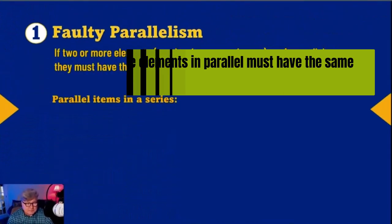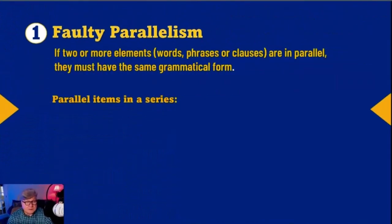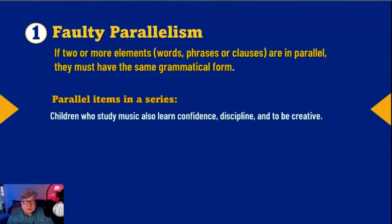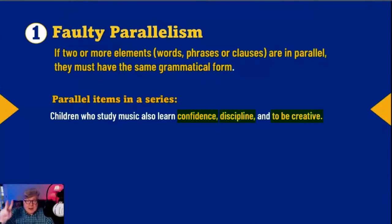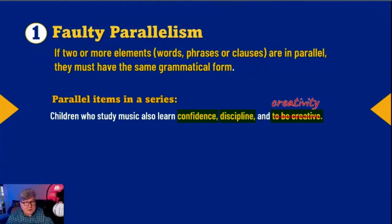Let's illustrate. The easiest one to understand is parallelism in series. Children who study music must also learn confidence — a noun — discipline — a noun — and to be creative. We need another noun there in order for the three items in the list to be in parallel: confidence, discipline, and creativity.